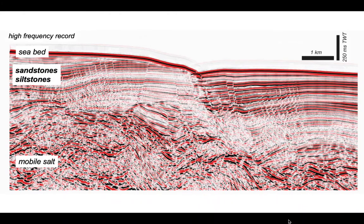We're going to concentrate on the sandstones and siltstones in the shallow section. These are almost certainly contourites — sediments that were deposited and reworked by submarine currents — and these types of sediments are commonly characterized by this high-frequency seismic facies.